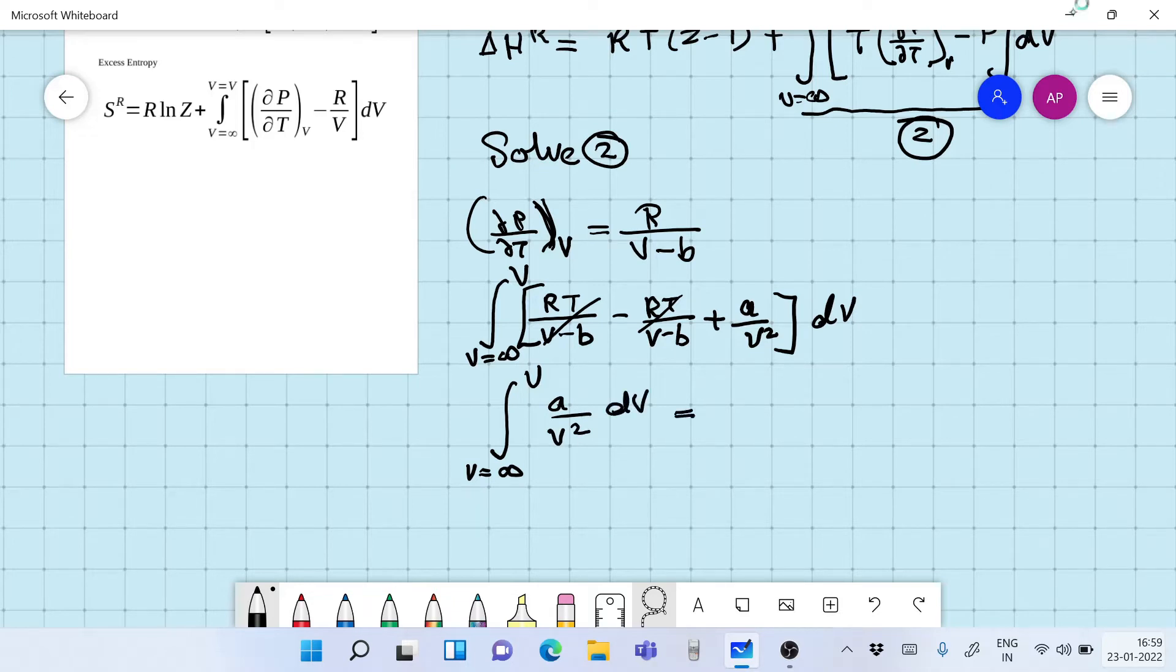So this is equal to integral V, we have A by V square dV. Now if we integrate this, we are going to get it as A over V minus 1. So this is equal to minus A by V minus V infinity. So this further can be written as minus A, 1 by V minus 1 by infinity. That's going to be equal to 0. So we are going to have minus A upon V.